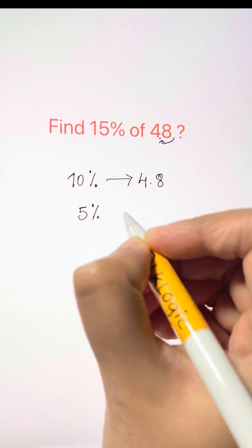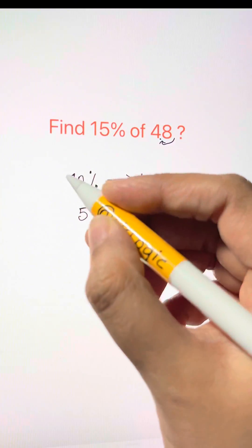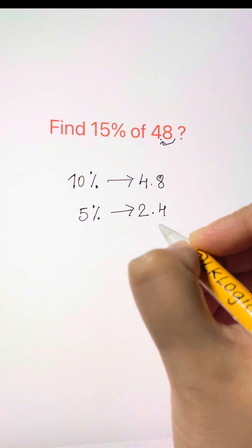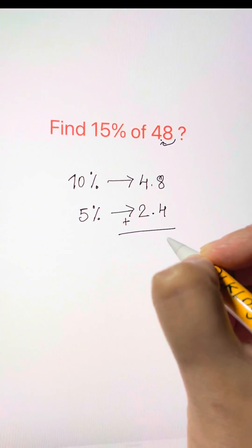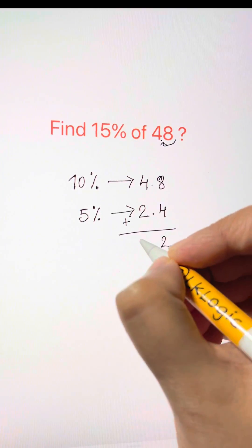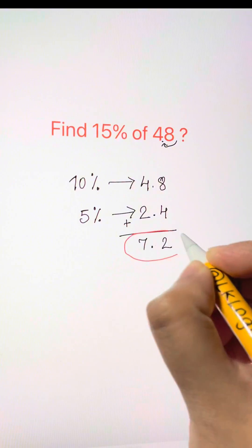Now we find 5% of 48, and 5% is half of 10%. So half of 4.8 will be 2.4, and then we add them up. 8 plus 4 is 12. 4 plus 2 plus 1 is 7. So 7.2 is your answer.